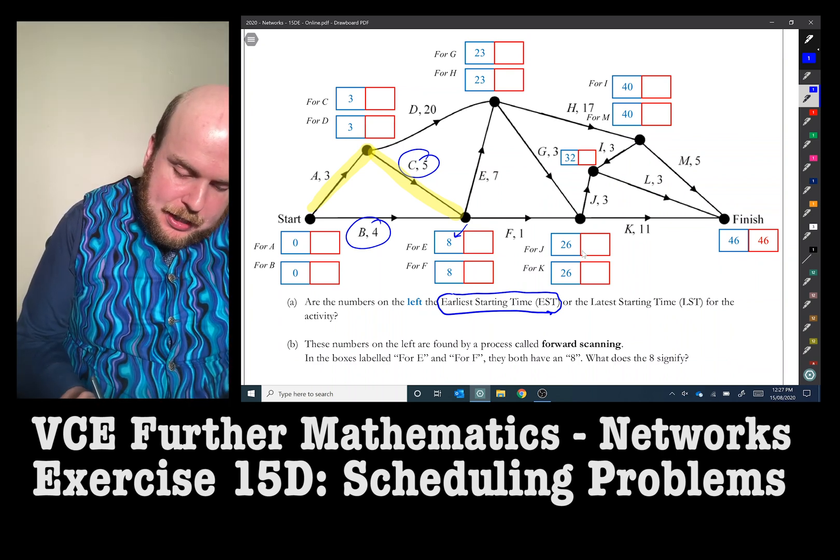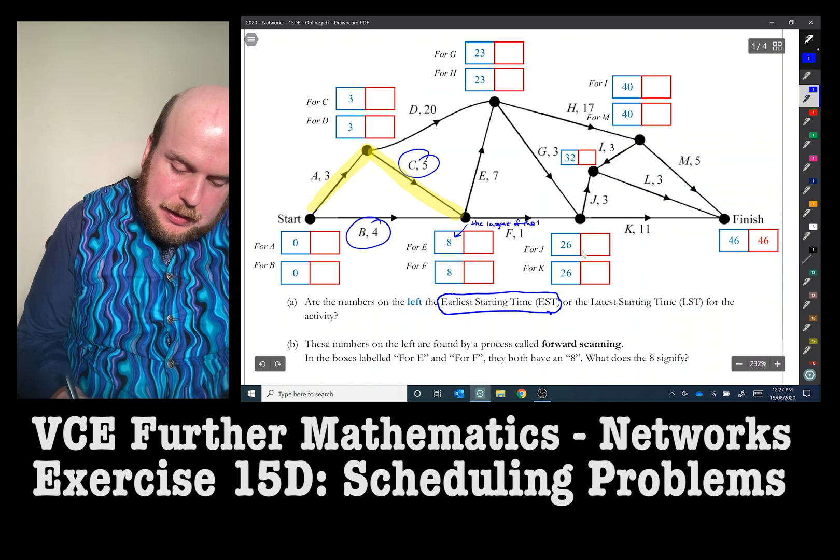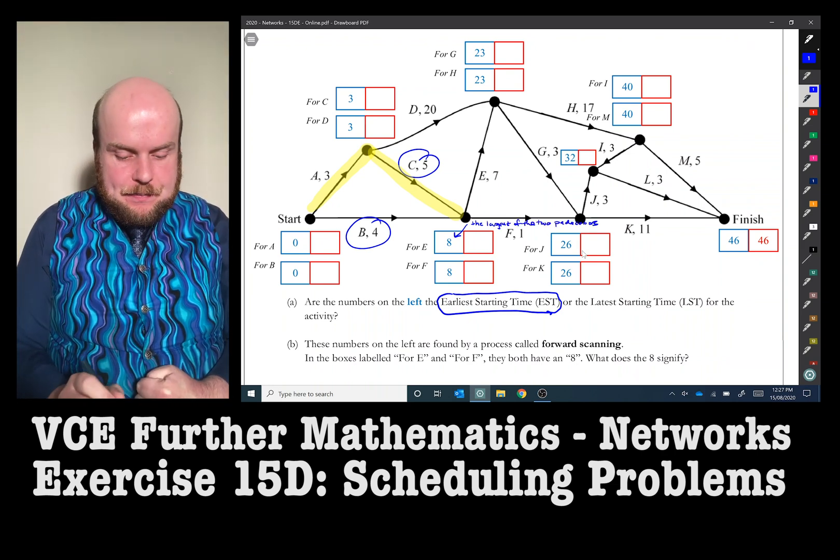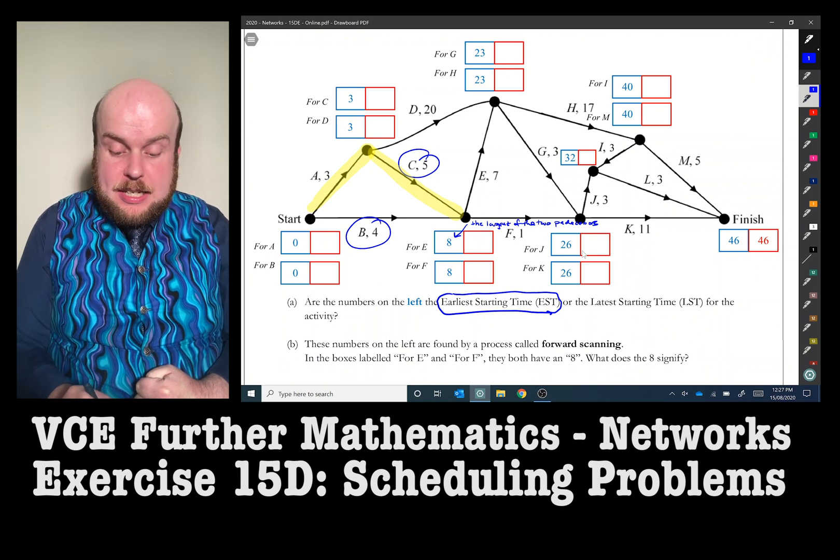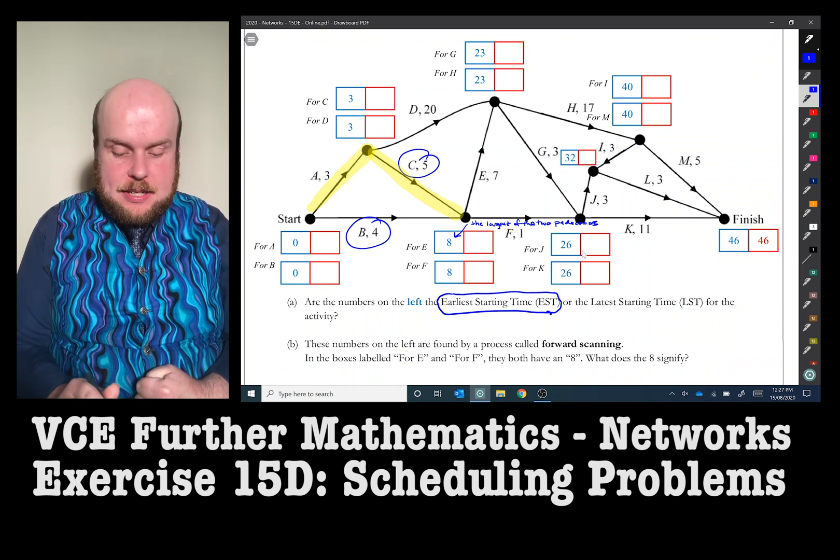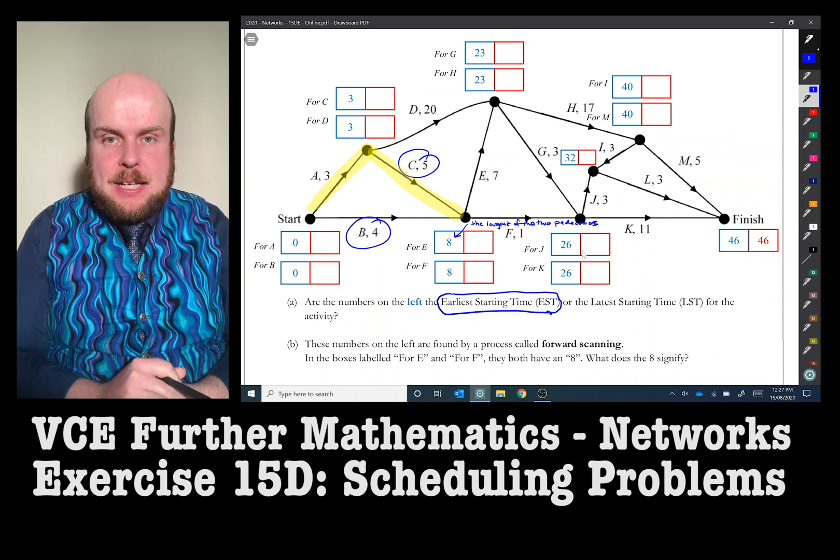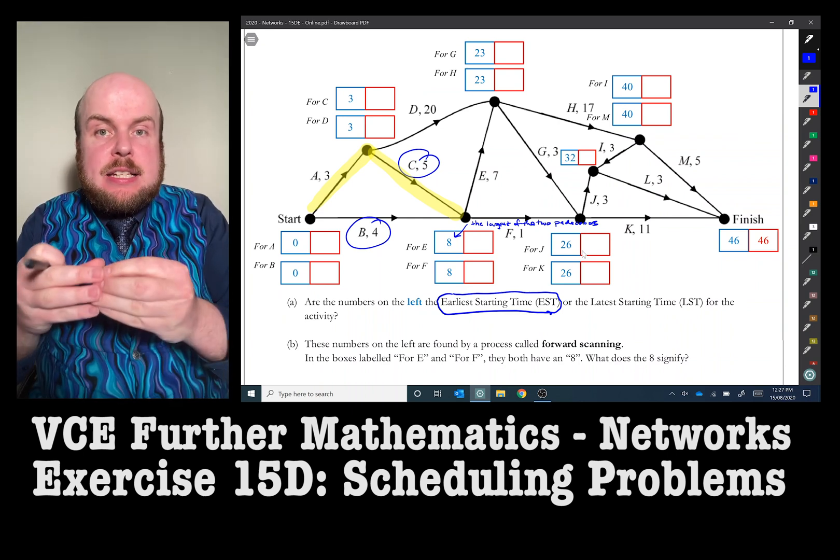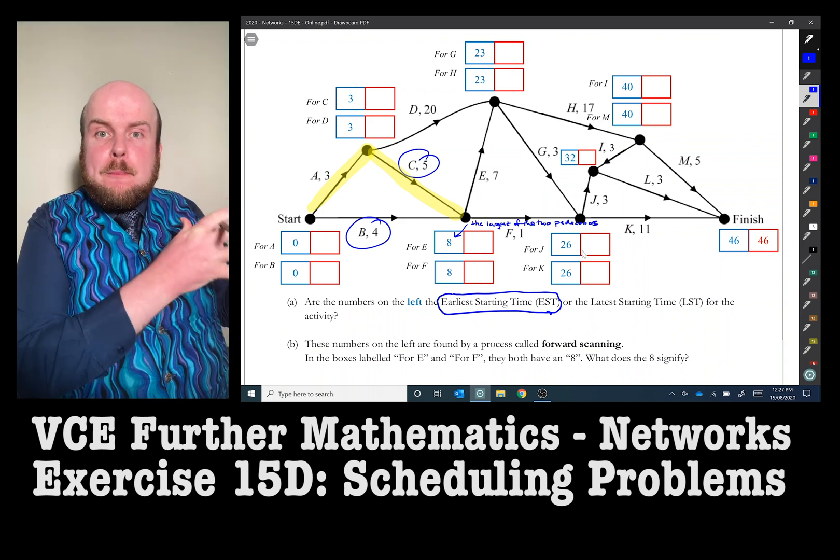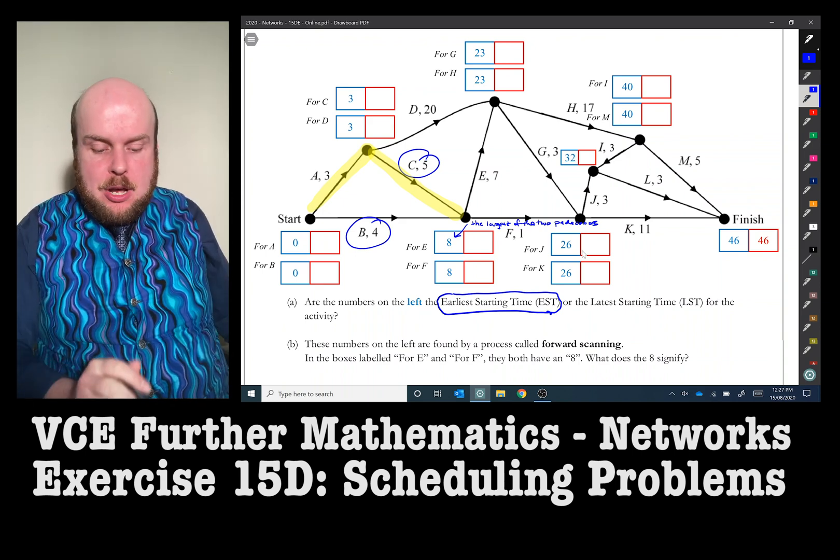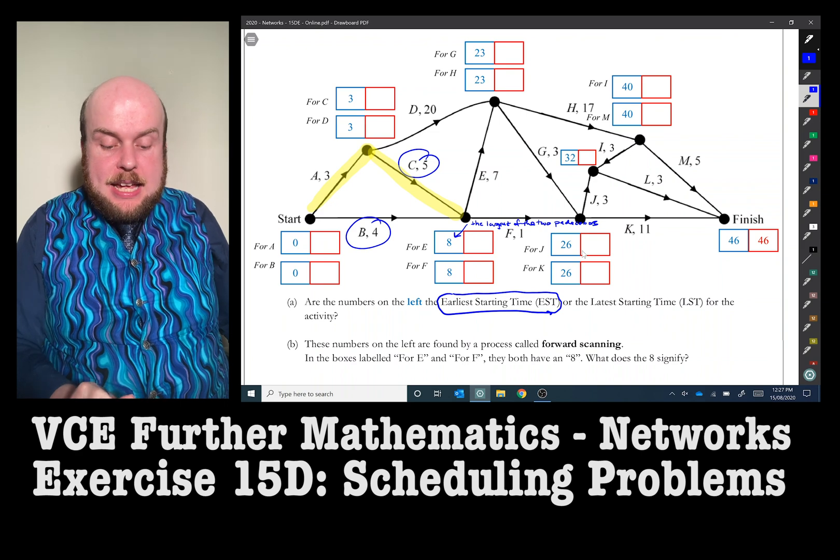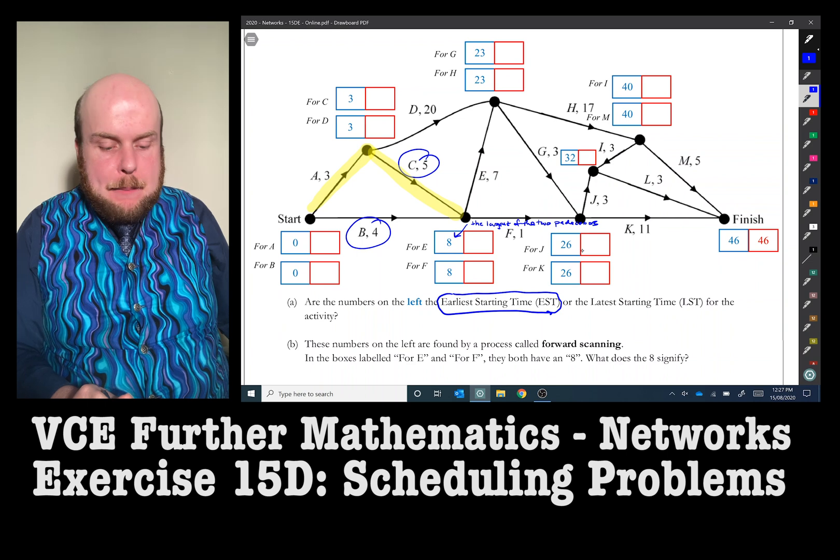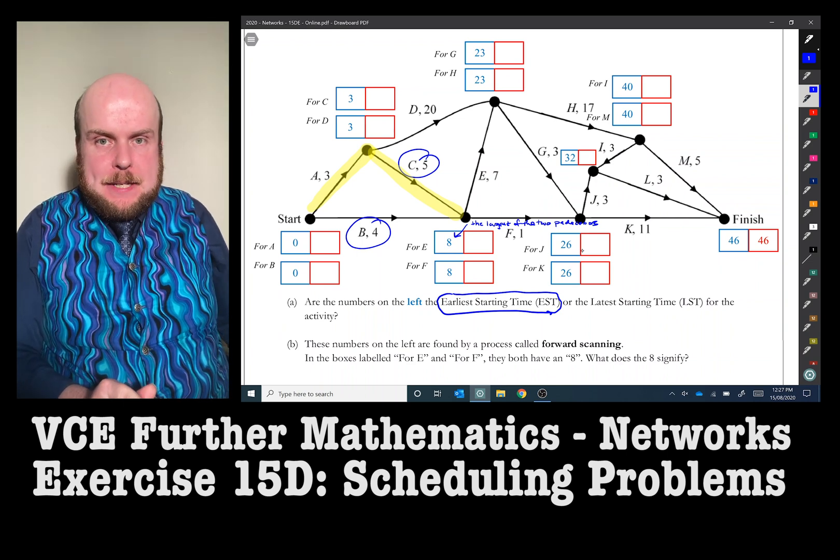So the largest of the two predecessors. For E to, in order to get E started or F started, it must be eight hours into the project because remember that we cannot start an activity until all the predecessors have been done. We cannot start E until C and B have been completed and C can only be completed when A has been completed.